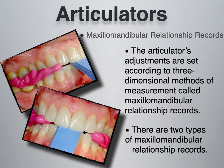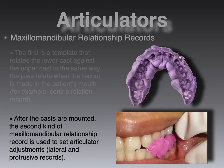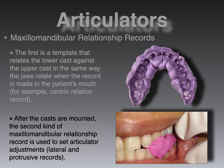There are two types of maxillomandibular relationship records according to the Air Force Manual. The bite registrations shown are not with a typical centric occlusion, but rather records taken during certain excursions. The first type is a template that relates the lower cast against the upper cast in the same way the jaws relate when the record is made in the patient's mouth — for instance, a centric relation record. Centric relation is a condylar position, not a tooth-to-tooth relationship like centric occlusion. For an edentulous patient, the clinician will put them in a centric relation position captured with occlusal rims.